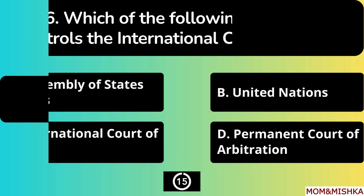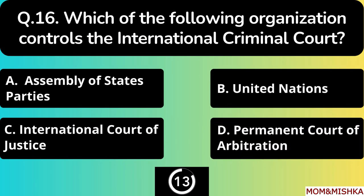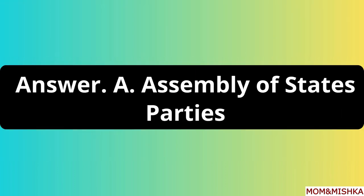Which of the following organizations controls the International Criminal Court? The correct answer is option A — Assembly of States Party.